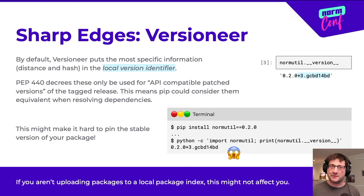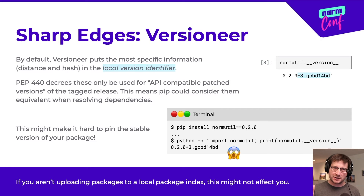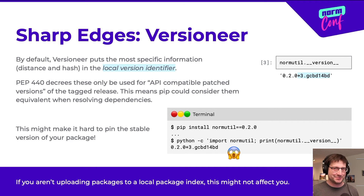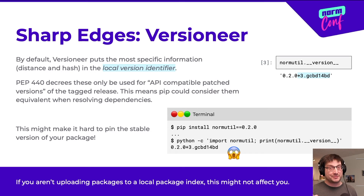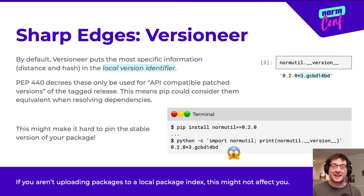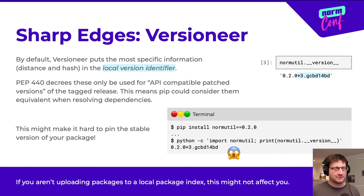Both these tools have some gotchas that didn't trip me up until I had already been using them for a while. I really like the concise version numbers that versioneer makes by default, but these started causing problems for us once we started uploading packages to a package index instead of just installing straight from GitHub. I learned that the part of the version string after the plus sign is called a local version identifier, and it's not intended to indicate that something is a development version of the package. Technically, you'd need the literal word 'dev' in the version name to indicate that to pip, and it needs to come before the plus sign. So if you use versioneer's defaults and upload packages to a local package index, pip might consider a version with a local identifier to be interchangeable with a version that doesn't have that suffix. Long story short, we tried pinning the non-development version of our packages and ended up getting a development version instead, which was a fun day at work. This is only a problem with versioneer's default format — there are more verbose options that don't have this problem, and if you aren't using a private package index, it won't even matter to you.